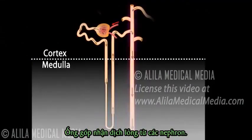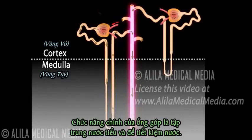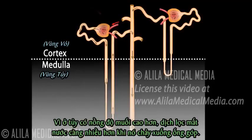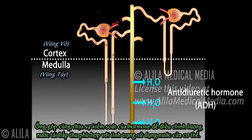The collecting duct receives tubular fluid from several nephrons. Its main function is to concentrate urine and therefore conserve water. This is made possible by the osmolarity gradient generated by the loop of Henle. As it gets saltier deep in the medulla, the filtrate loses more and more water as it flows down the collecting duct. The collecting duct is also under hormonal control so it can adjust the amount of reabsorbed water according to the body's state of hydration.